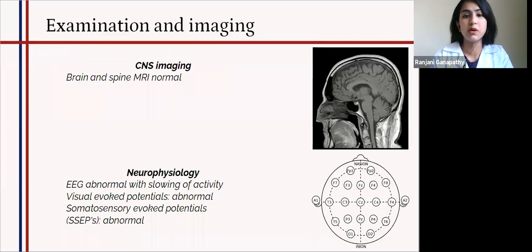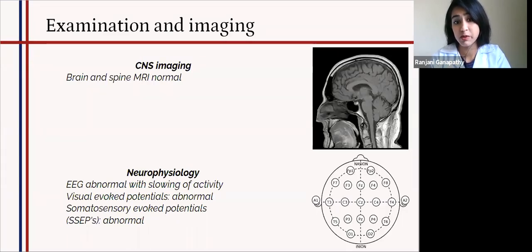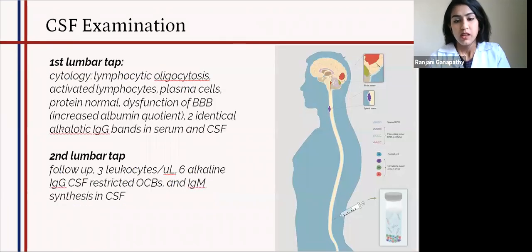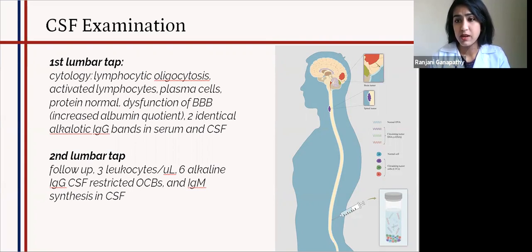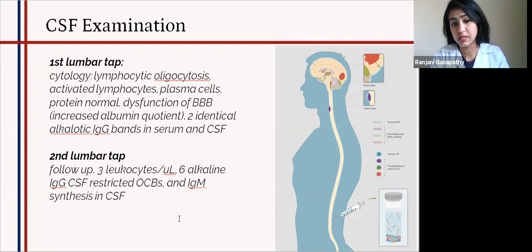Even though we knew what it was, we had to do examination and imaging. We started with CT to rule out something acute — it was normal. Spinal and brain MRI were also normal. On neurophysiology testing, the EEG was abnormal, and the visually evoked potentials and somatosensory evoked potentials were also abnormal. On CSF examination at the first lumbar tap, we could see a few polyclonal bands and increased albumin quotient due to dysfunction of the blood-brain barrier. It's important to repeat these findings because sometimes CSF findings evolve — if something's inconclusive in the beginning, it helps to redo them. Over time, the oligoclonal bands became more obvious, with six bands restricted to the CSF, confirming inflammation in the central nervous system.